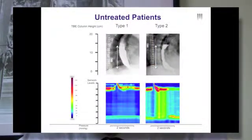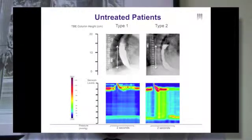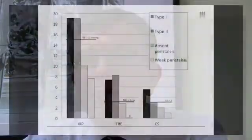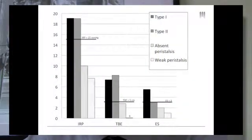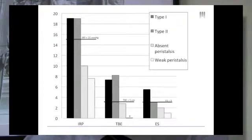Our results showed that in the untreated group of patients, our initial hypothesis was not confirmed — esophagram and Achalasia scores were similar between Achalasia subtypes. After treatment, the results were more in line with our initial hypothesis. Fifteen of the 25 patients had a resolution of the Achalasia pattern on high resolution manometry and converted to either absent peristalsis or weak peristalsis.